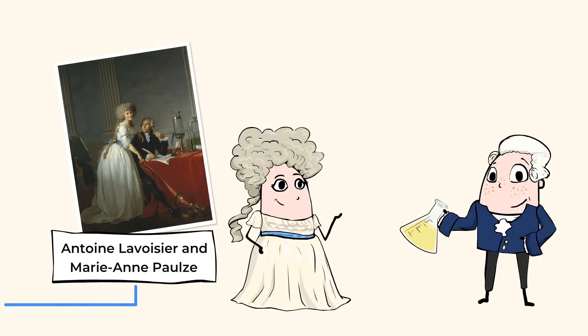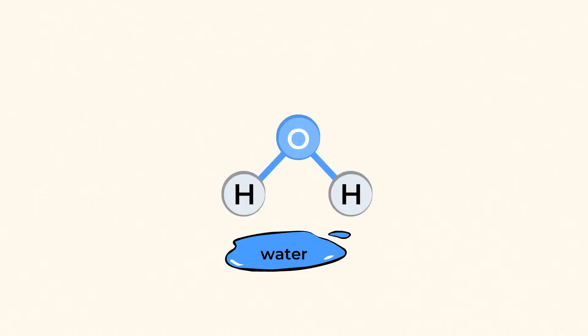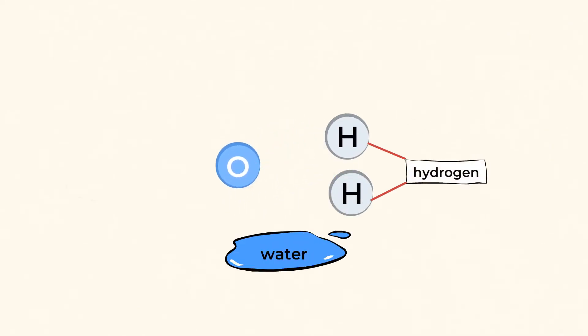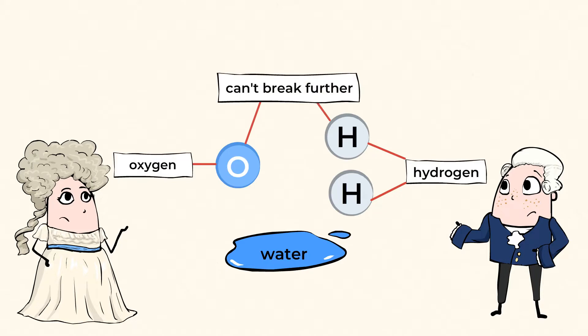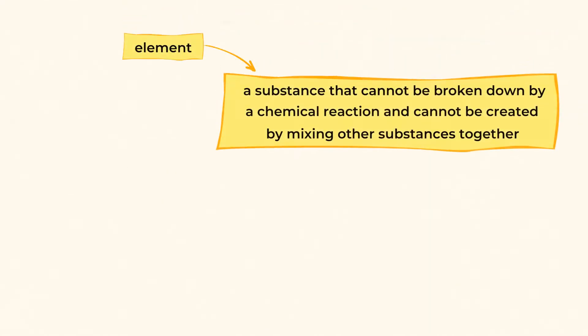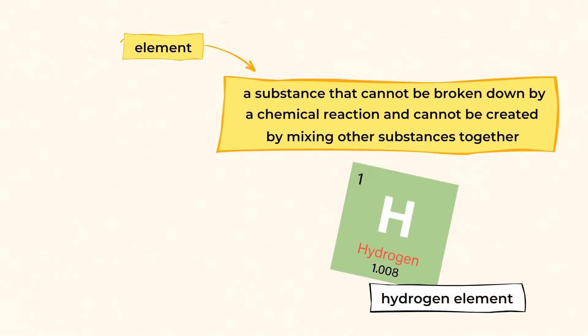Thousands of years later, Antoine Lavoisier and Marie-Anne Pauls took Jabir Ibn Hayyan's work a step further and found that pure substances could be broken down even further through chemical reactions. Water, for example, can be split into two gases: hydrogen and oxygen. Lavoisier and Pauls tried through many experiments but could never break those two gases down any further, and concluded that these were elements. An element is a substance that cannot be broken down by a chemical reaction and cannot be created by mixing other substances together.